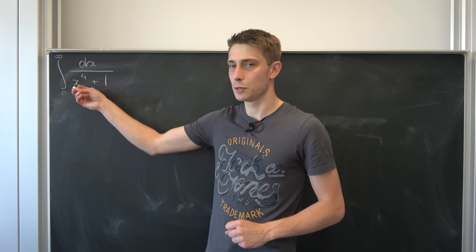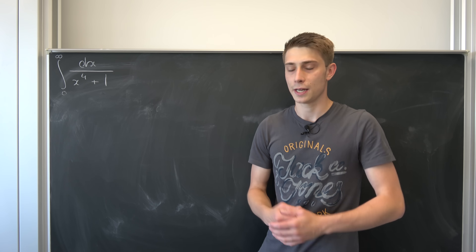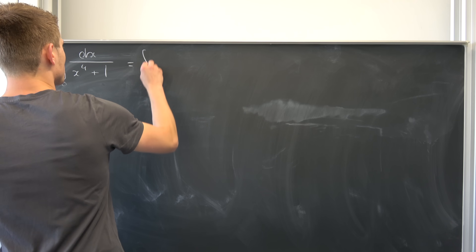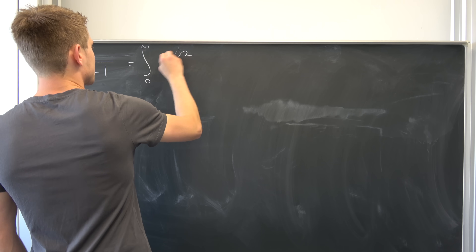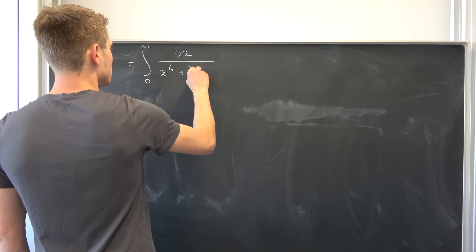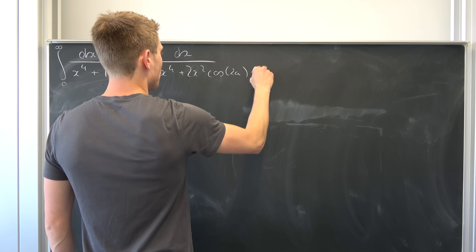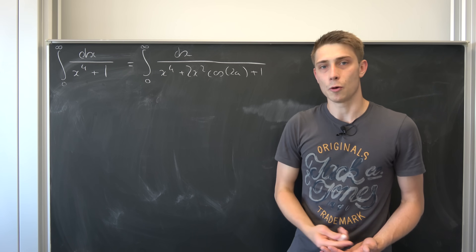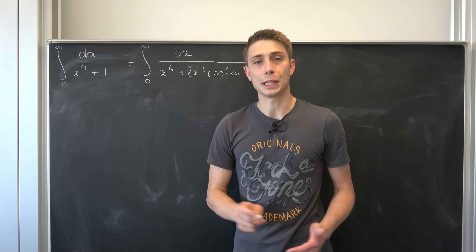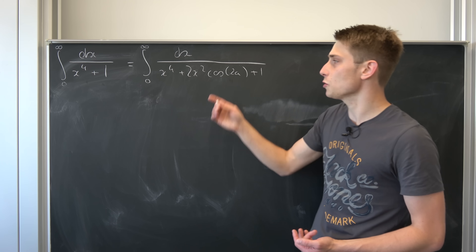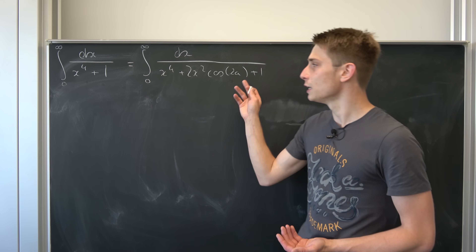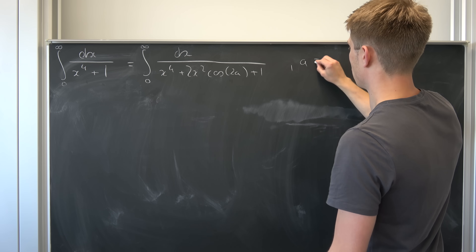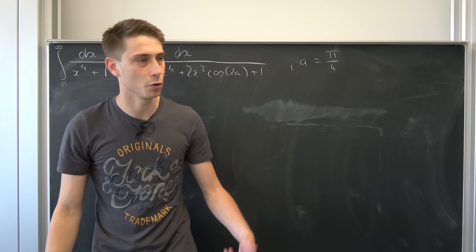You might agree with me that we could add a zero in the denominator right here and it wouldn't change anything. And if you're a smart boy you might notice what a zero actually is. So we can rewrite this as the integral going from zero to infinity of dx over x to the fourth power plus 2x squared cosine of 2a plus 1. For a value of a being pi over 4, this relationship holds because we are getting the cosine of pi over 2, and that's zero. This is going to vanish, and it holds. Keep this in mind — it's going to be quite important in the end.